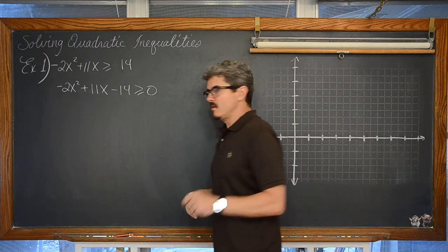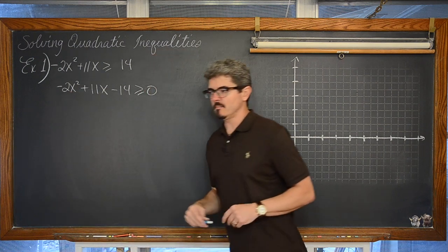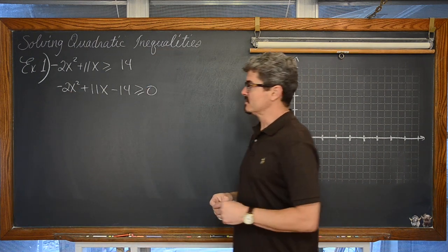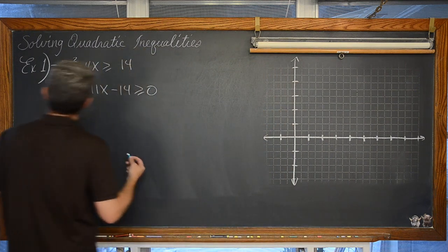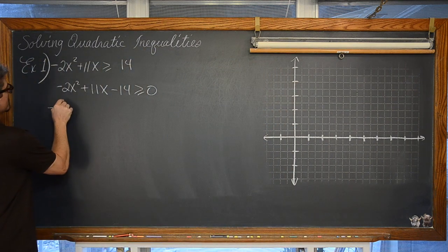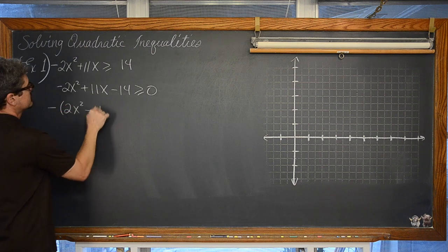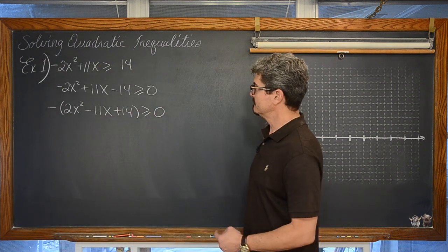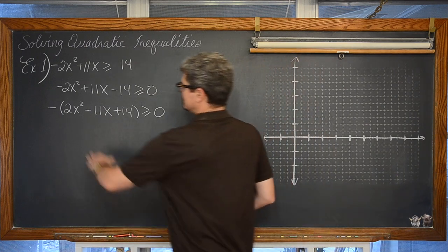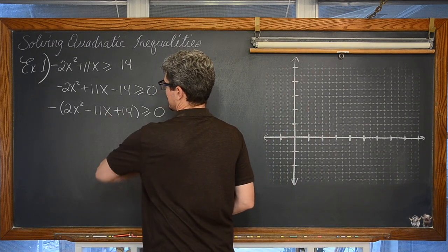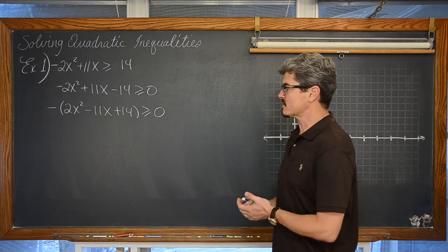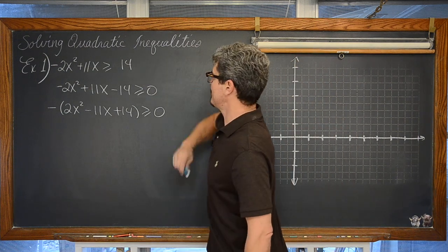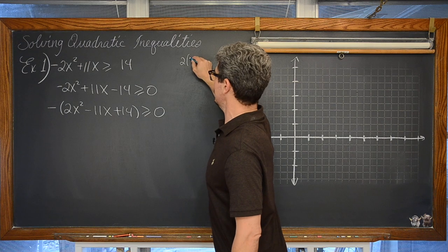I don't like to solve quadratics by factoring when the leading coefficient is not 1. So we are going to go ahead and factor out a negative 1. We are going to have our 2x squared minus 11x plus 14. We are going to factor this quadratic. Students often struggle with factoring.